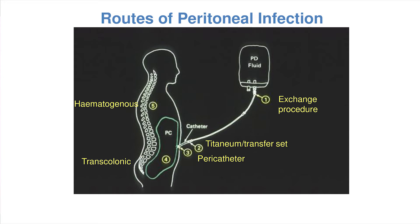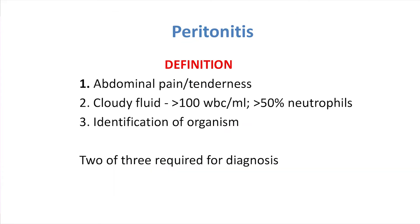So infection is going to happen in people on peritoneal dialysis. But remember, infections also occur in people on hemodialysis, particularly if they've got central venous catheters. The definition of peritonitis is having two of these three components: abdominal pain or tenderness; cloudy fluid with greater than 100 white cells per mL, with over 50% of those being neutrophils; and identification of the organism. Since identification of the organism takes time, in clinical practice it's numbers one and two.